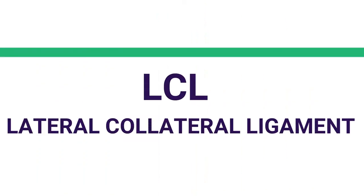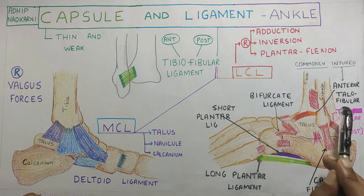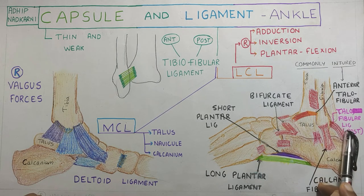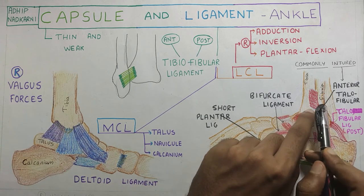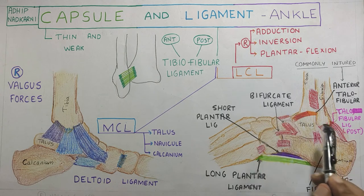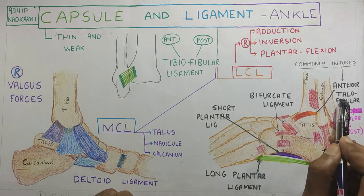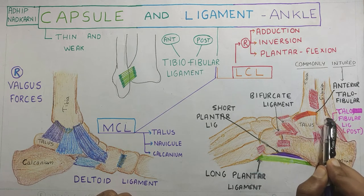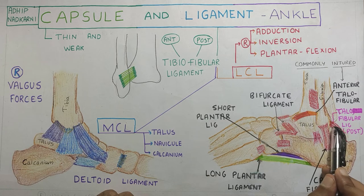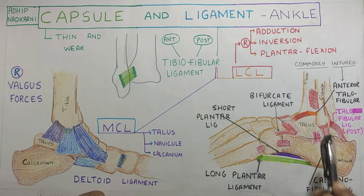Next is the LCL ligament or lateral collateral ligament. This is divided into three parts: the anterior talofibular ligament, posterior talofibular ligament, and the calcaneofibular ligament. Whereas the MCL ligaments connect the tibia to other bones, in the lateral collateral ligament, the ligaments connect the fibula to other bones. The anterior talofibular ligament connects the fibula to the talus anteriorly, and the posterior talofibular ligament connects the fibula to the talus posteriorly. Both these ligaments are more horizontally placed, and the calcaneofibular ligament is placed vertically.